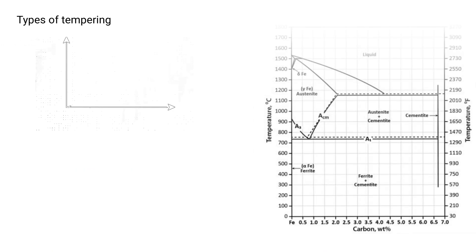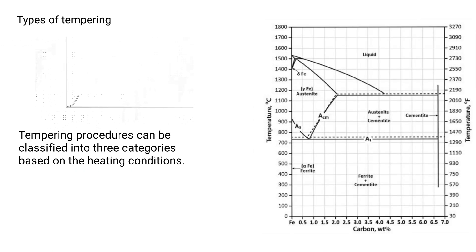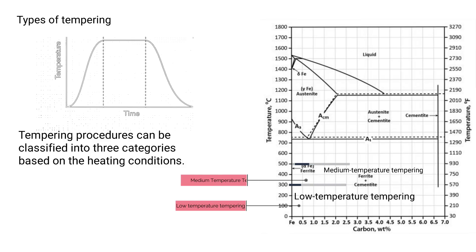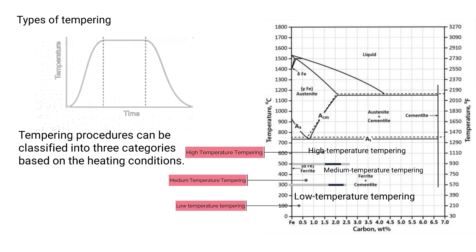Tempering procedures can be classified into three categories based on the heating conditions: low temperature tempering, medium temperature tempering, and high temperature tempering.